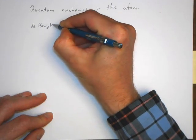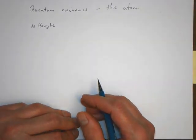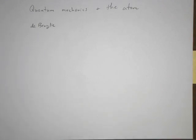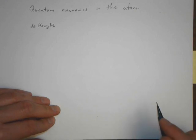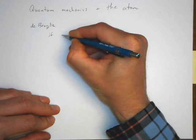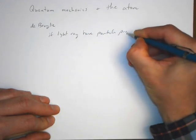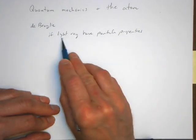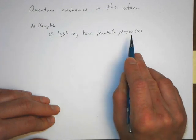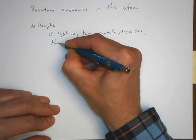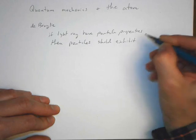He said, okay, if light rays have particle properties, meaning we have a photon, and so light rays have particle properties, we can think of them as being sometimes a wave, sometimes a particle. Do particles should exhibit wave-like properties. And so if light rays have particle properties, meaning the electromagnetic radiation that we can think of as traveling as a wave, we can also think of them as being photons, then particles should exhibit wave-like properties.